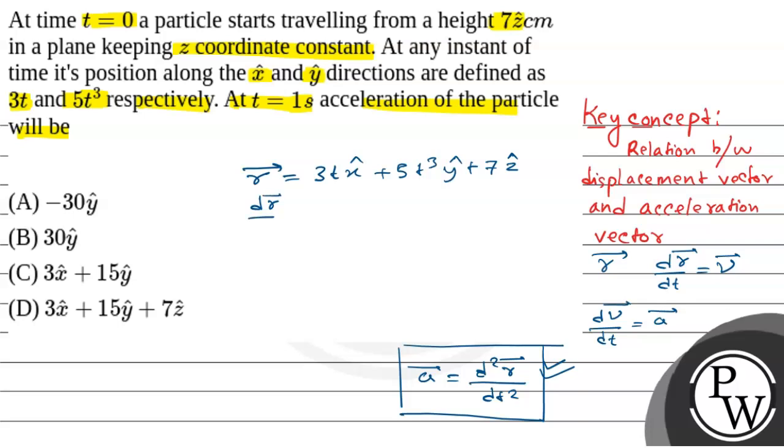So dr⃗/dt will be 3x̂ (because derivative of t with respect to t is 1) plus 15t² ŷ, because derivative of t³ is 3t².